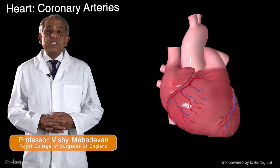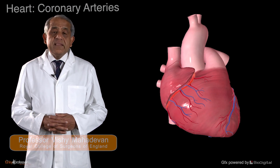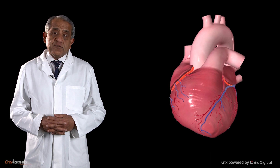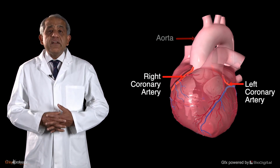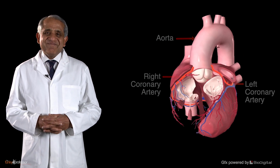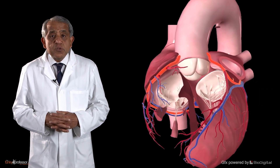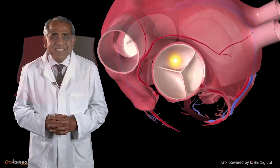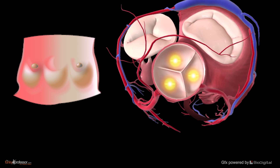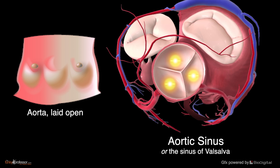The heart receives its blood supply from two arteries: the right and left coronary arteries. Each of these arteries has its origin at the very root of the aorta. If you were to look at the root of the aorta you would observe that it shows three natural dilatations, and these dilatations are the aortic sinuses or the sinuses of Valsalva, and it is in these sinuses that the coronary arteries have their origins.